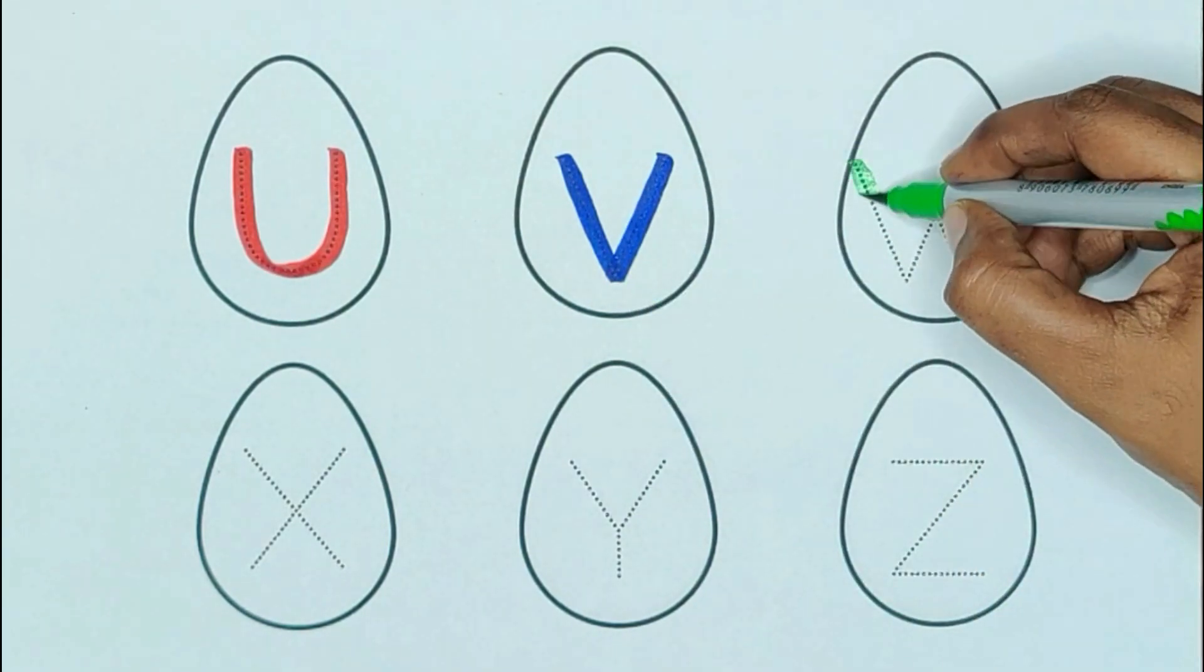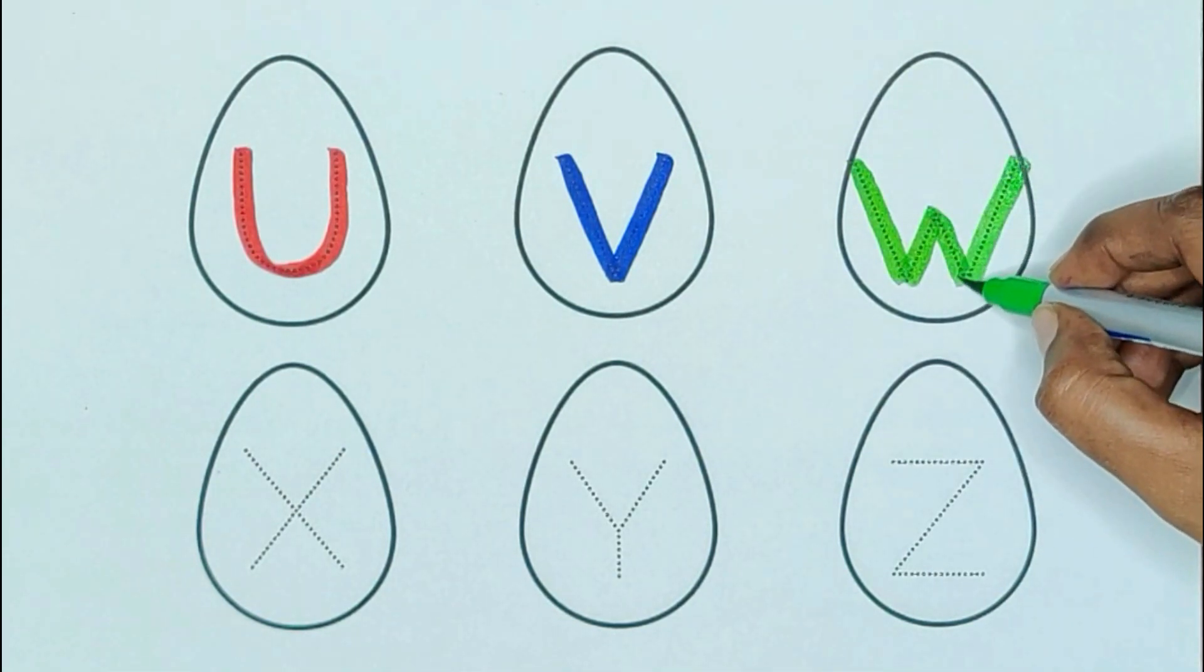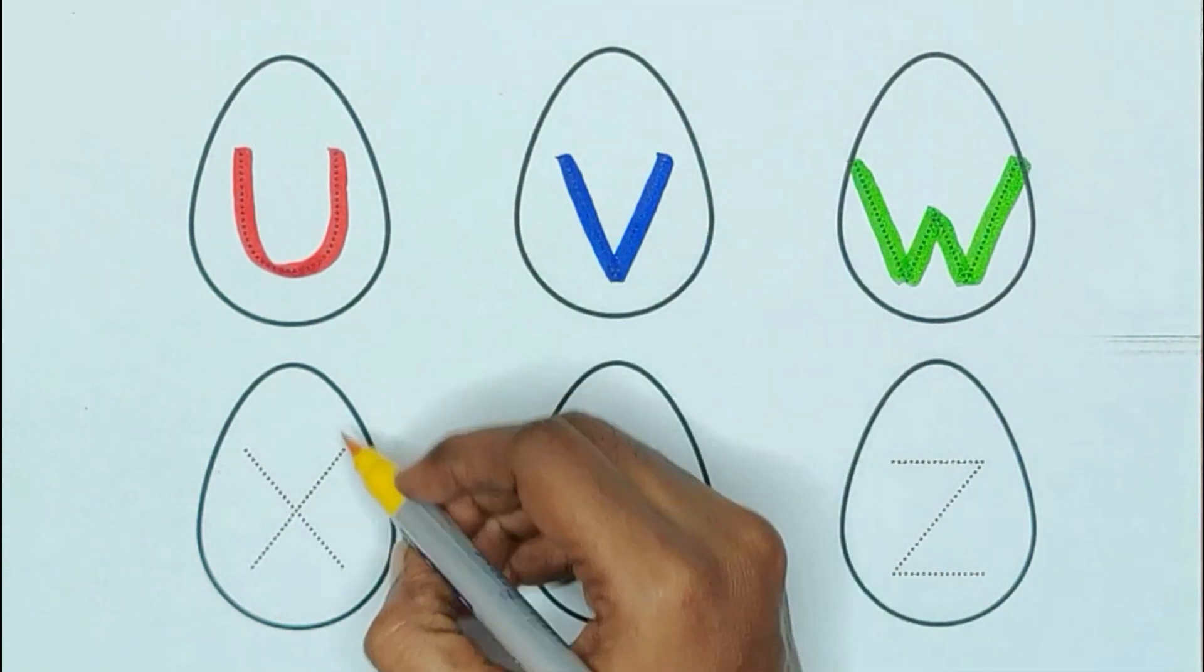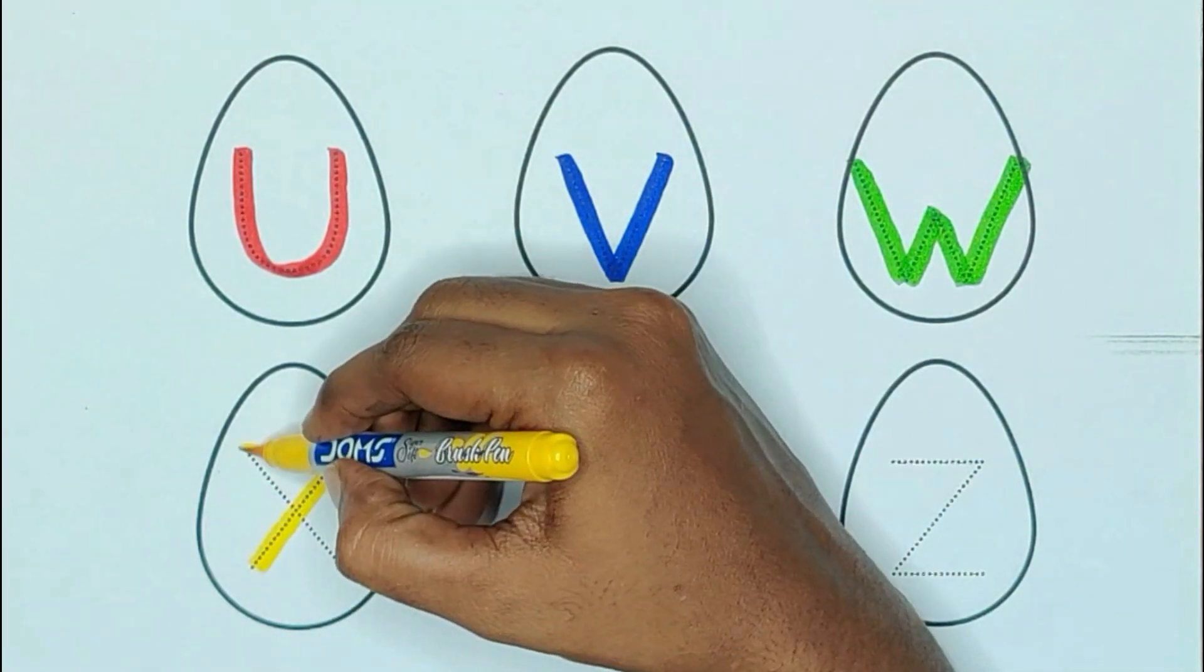Green color, W. W for wolf. Yellow color, X. X for xerox machine.